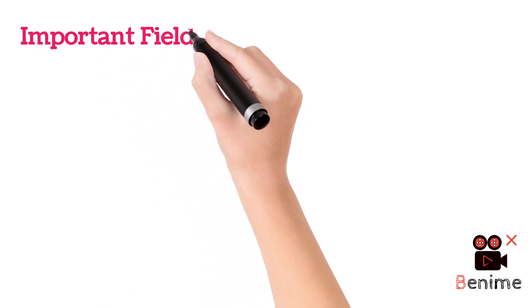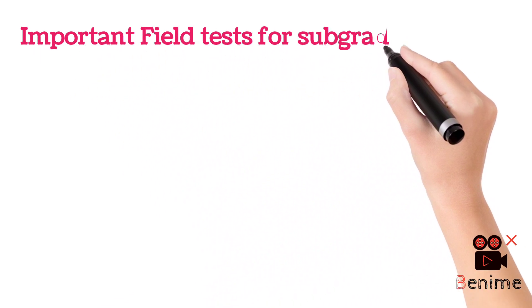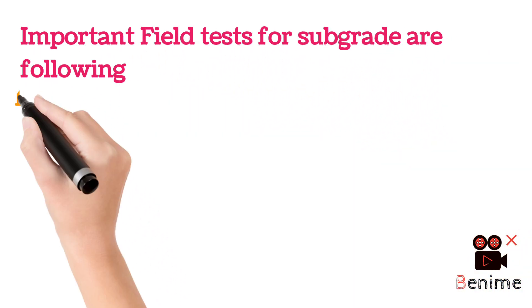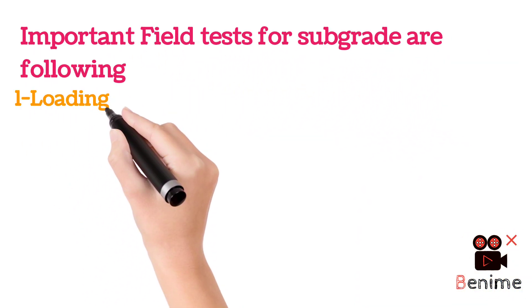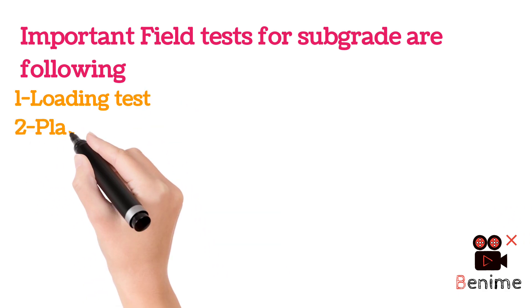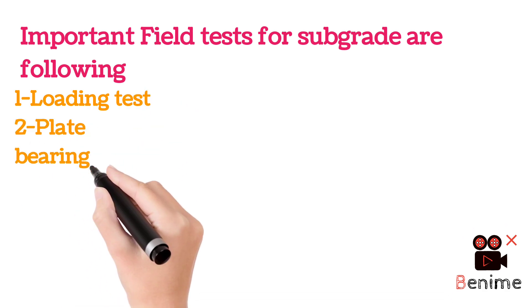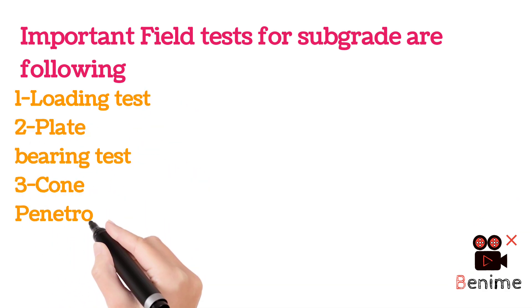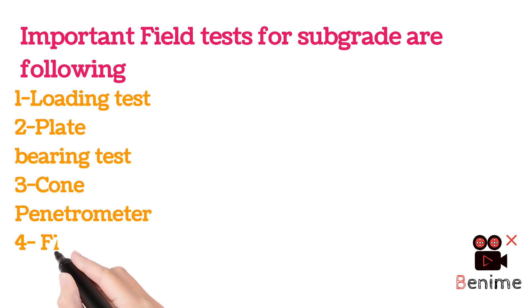Important field tests for subgrade are the following: one, loading test; two, plate bearing test; three, cone penetrometer; four, field CBR.